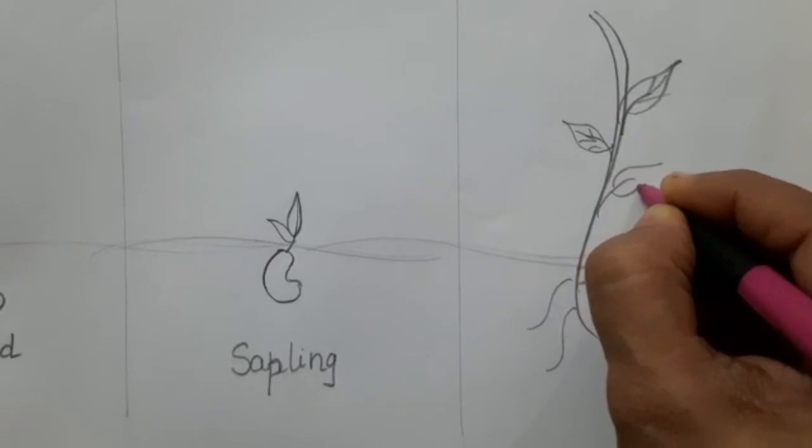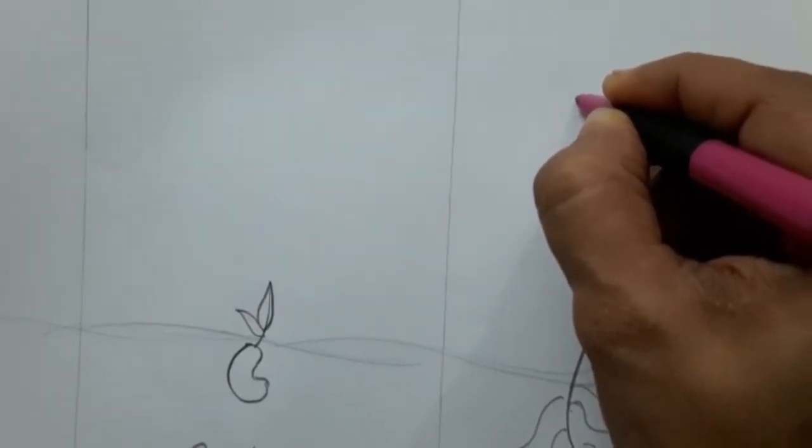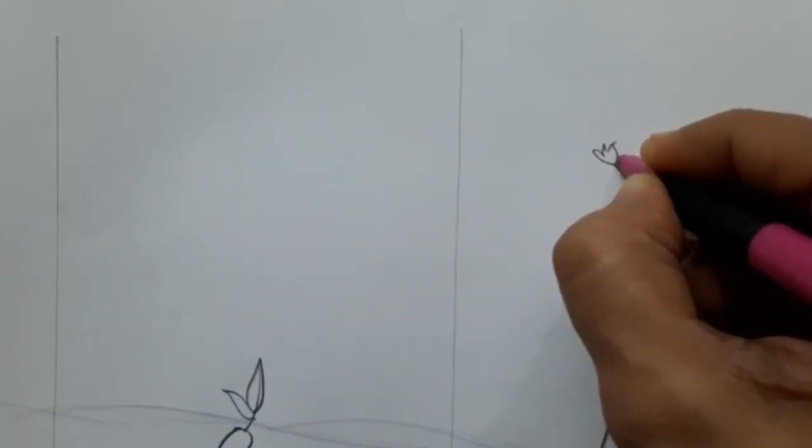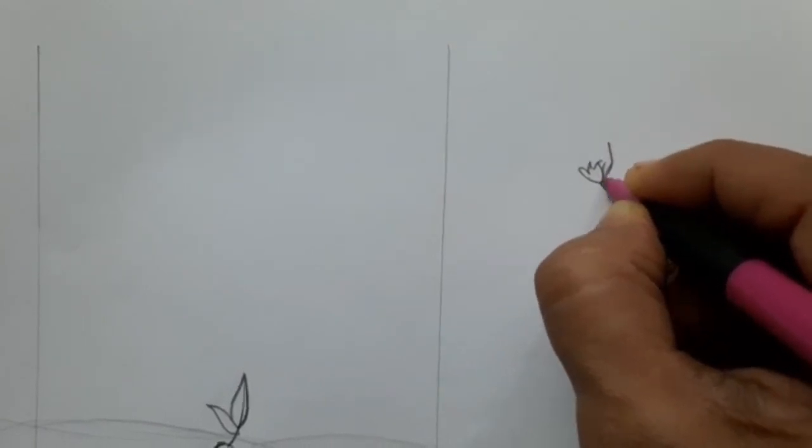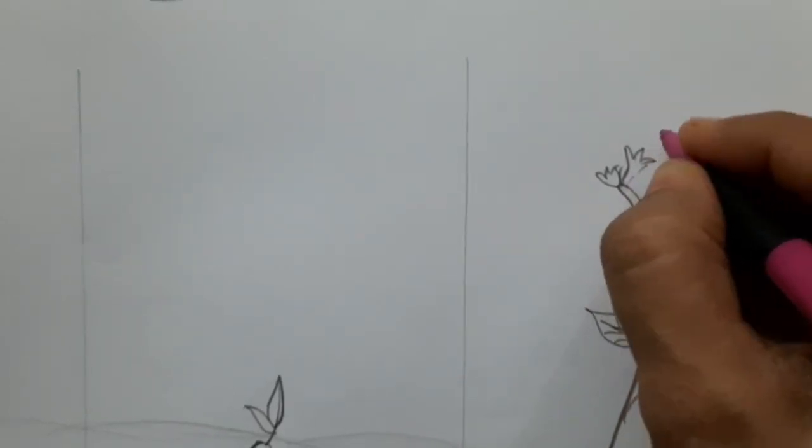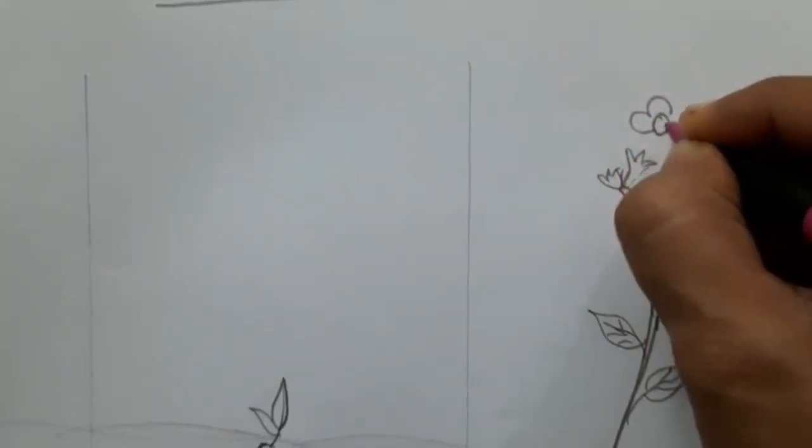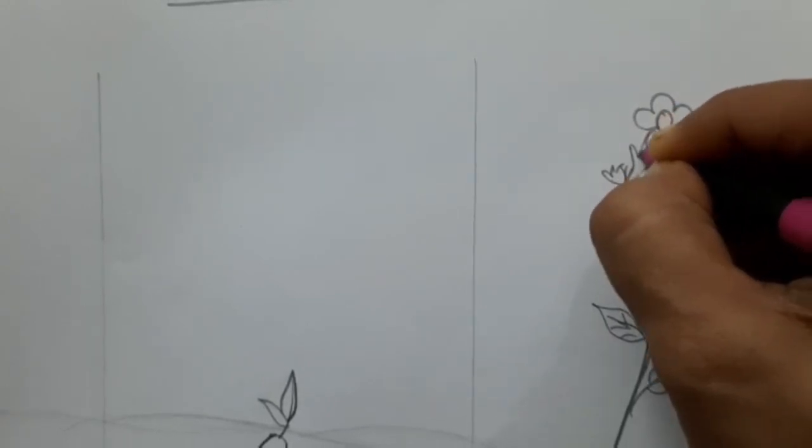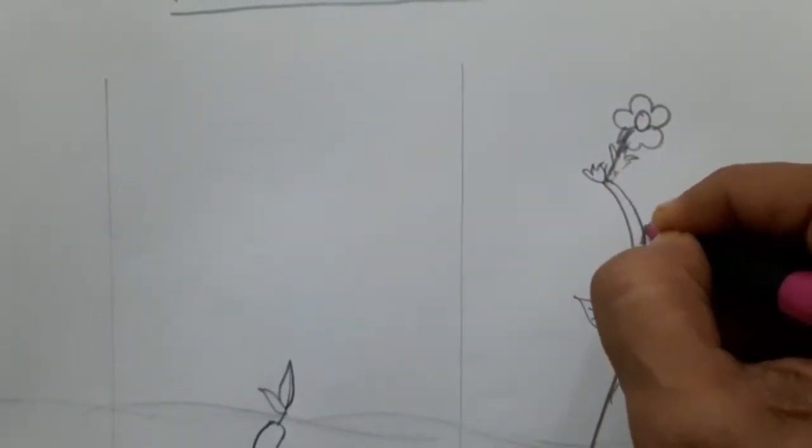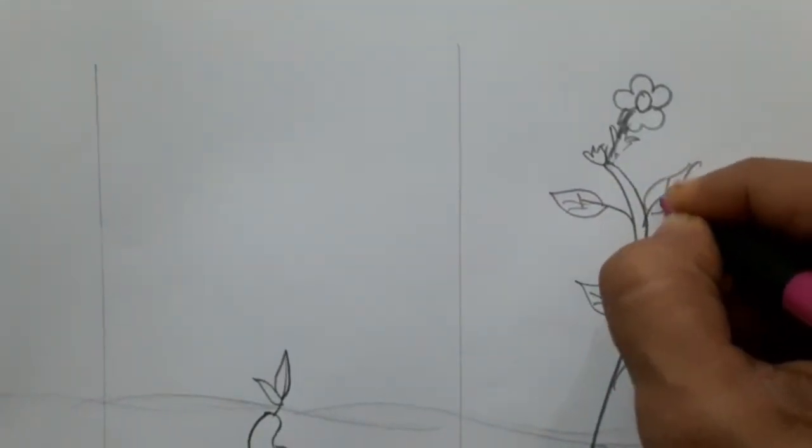Children, you can color this also, right? And then here I am going to draw a bud. A nice and beautiful flower. Okay. Here, more leaves, like this.